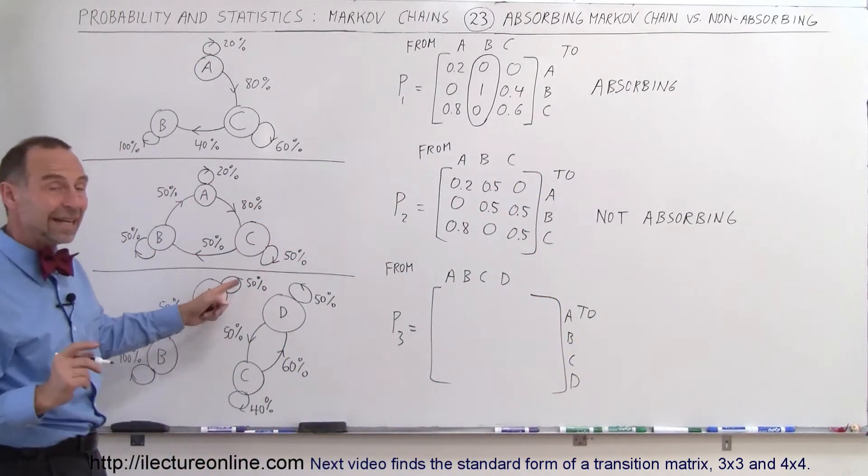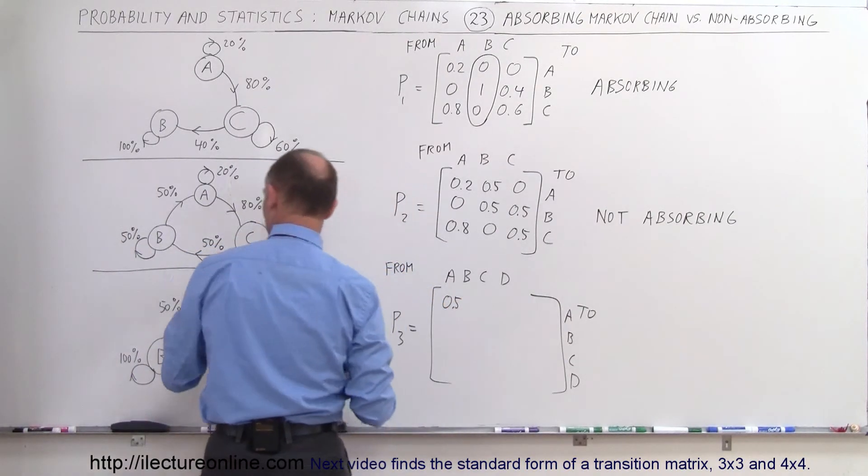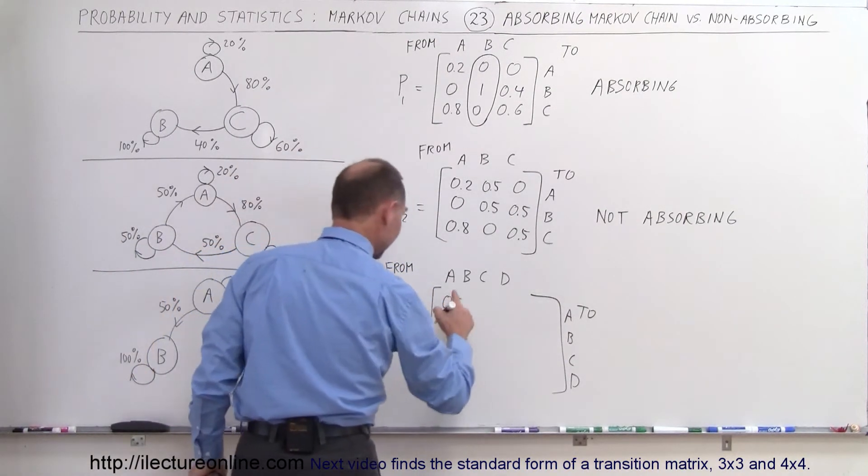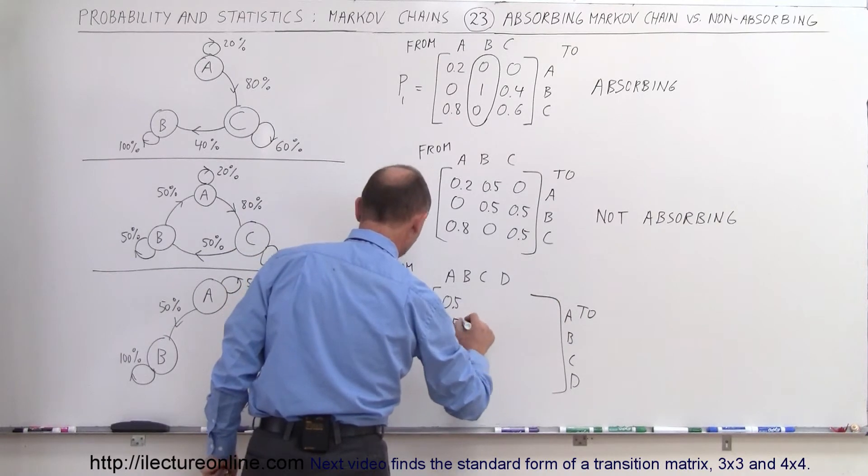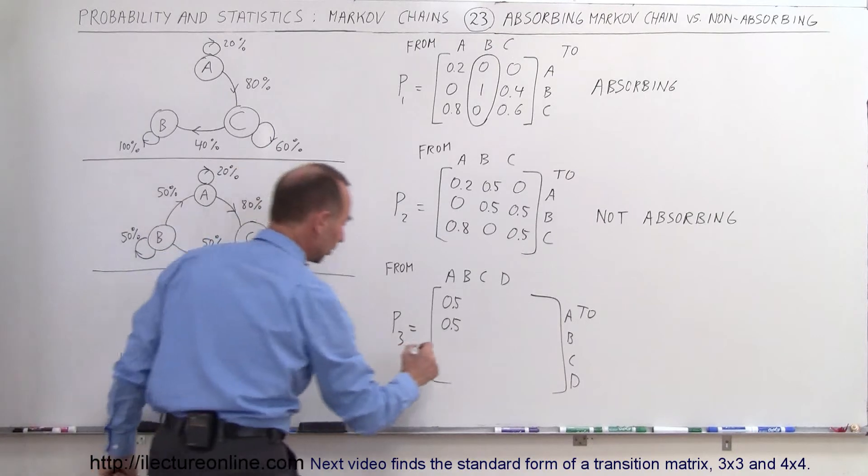So from A, staying within A is 0.5. So from A to A is 0.5. From A to B is 0.5. A to B is 0.5. But we don't have any transition from A to C or from A to D, so those are both 0s.